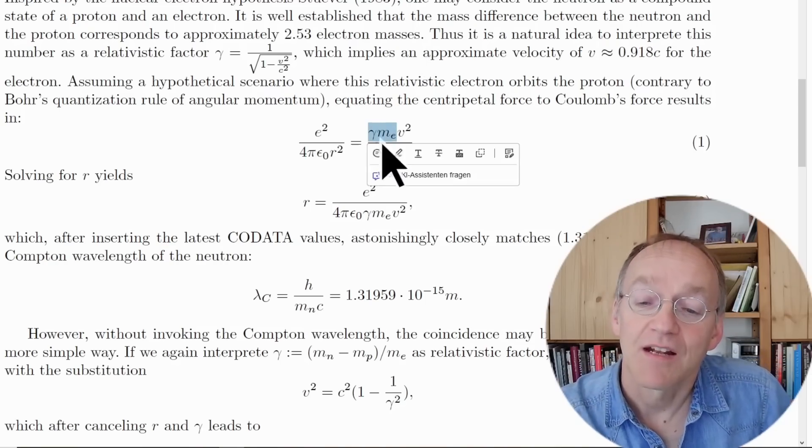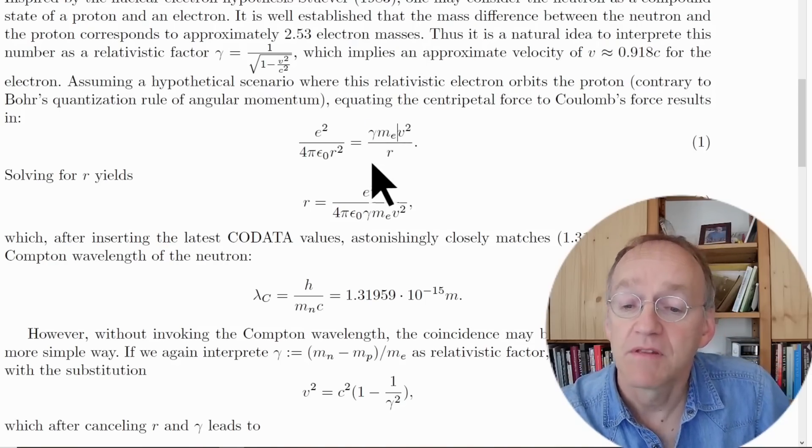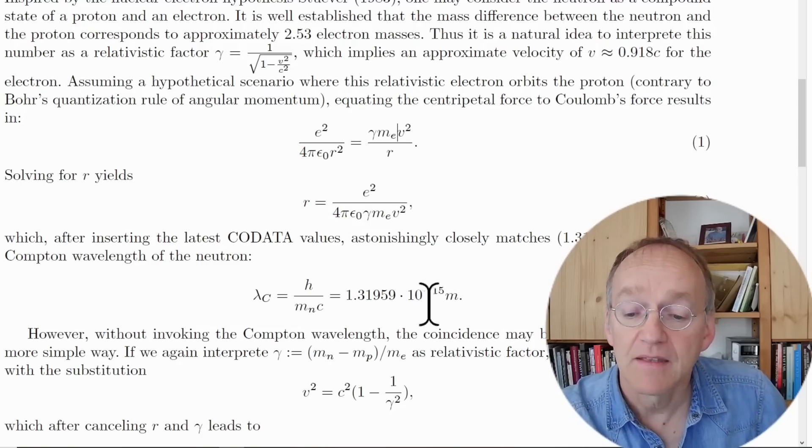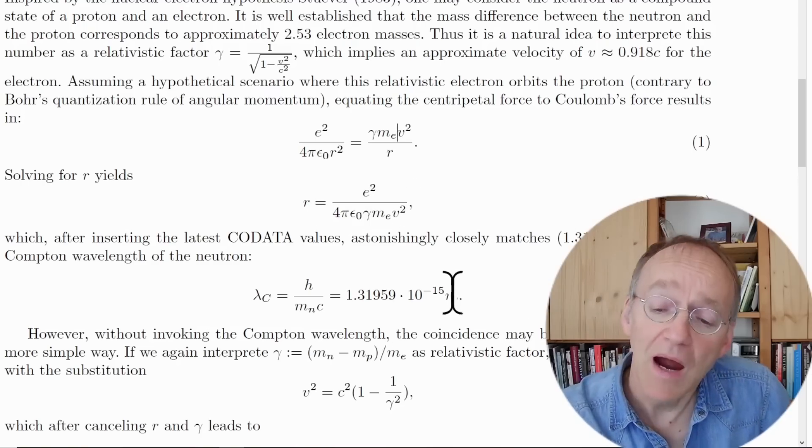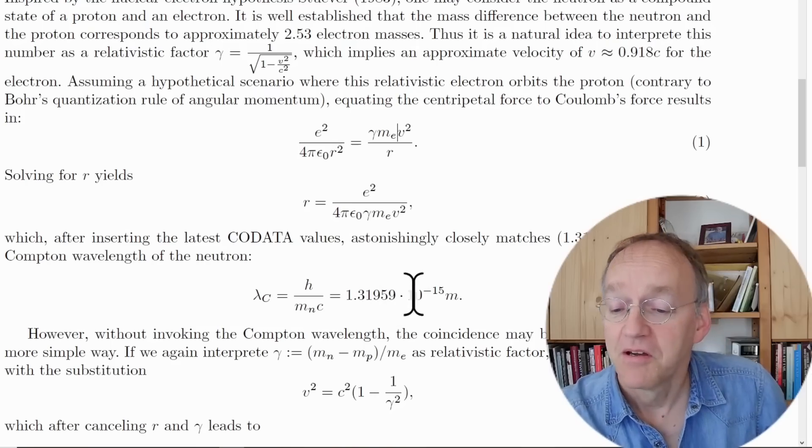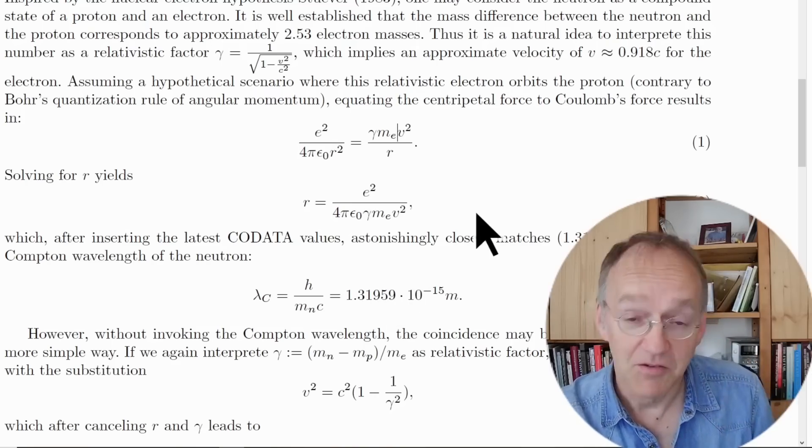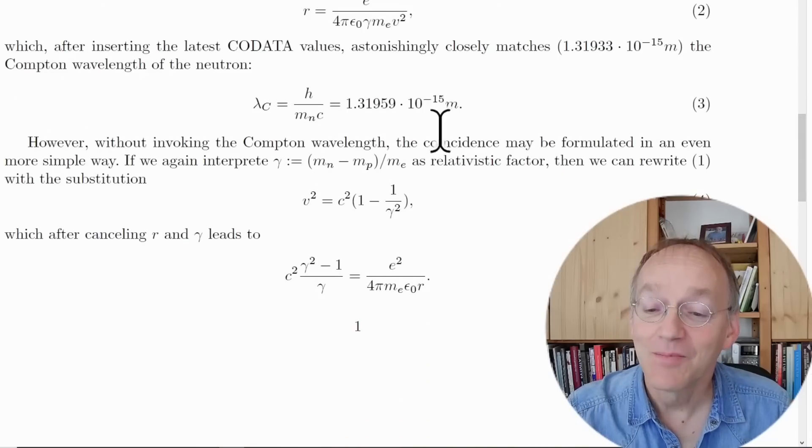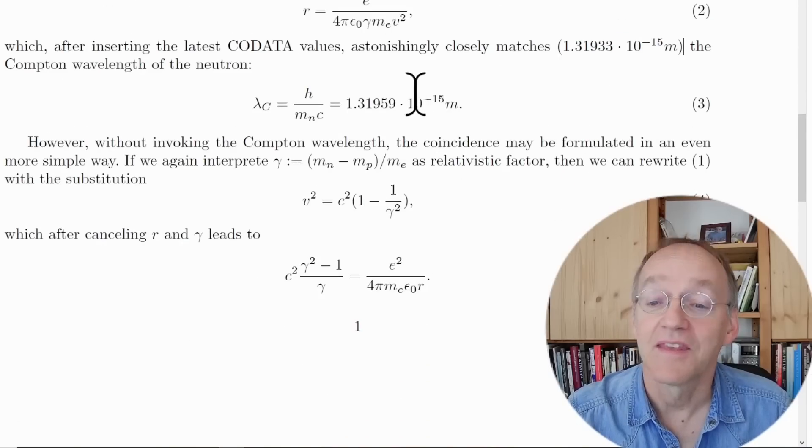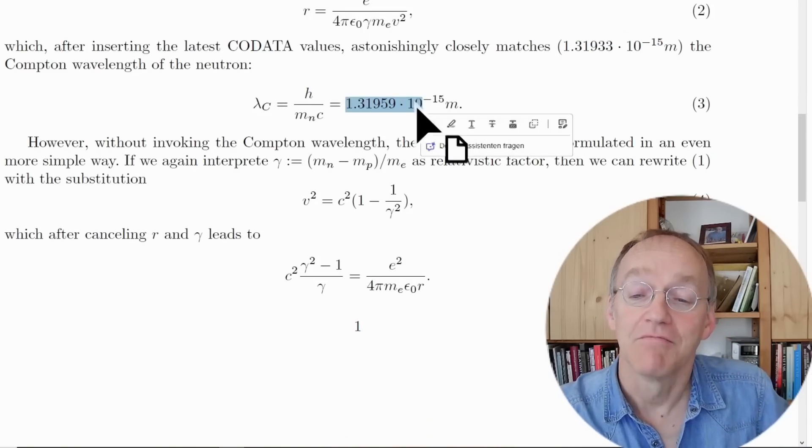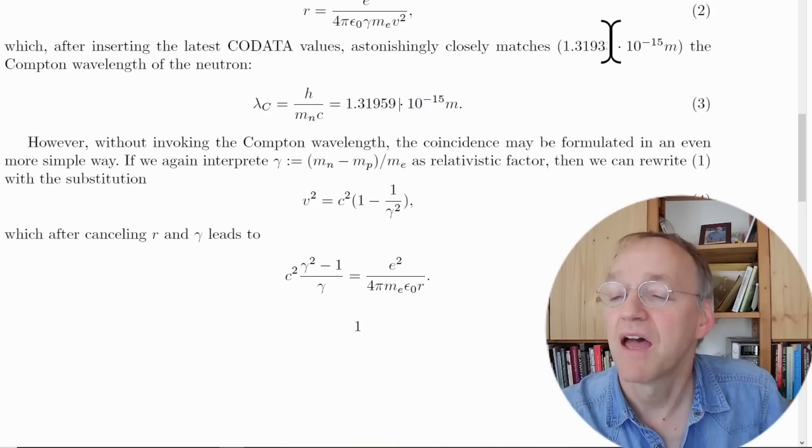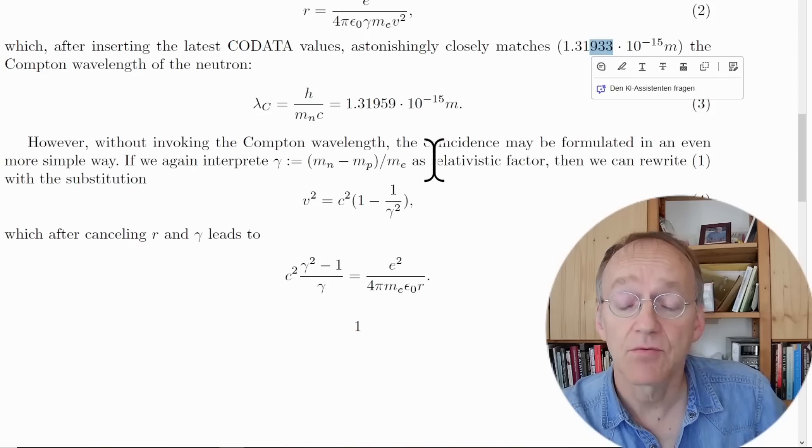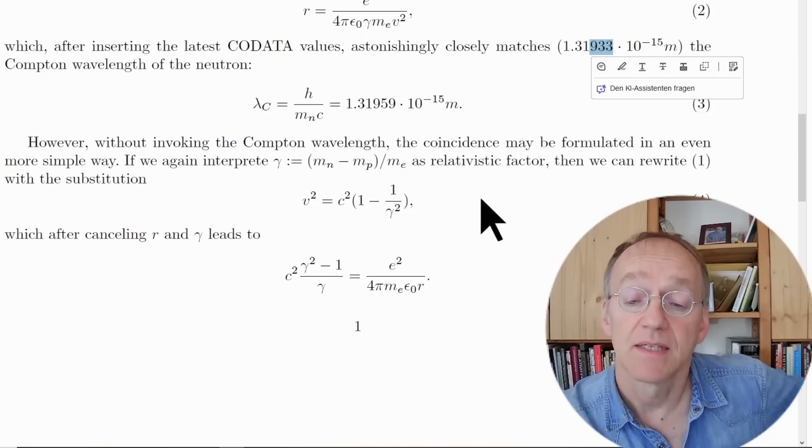You imagine a situation where you have the centripetal force equating the Coulomb force in this very small contracted hydrogen atom. Of course the mass of the electron is increased by the factor of gamma, but this is just the normal equation. Then you solve for the radius, and wow, it's so close to 10 to the minus 15 meter already.